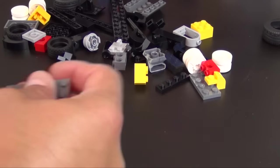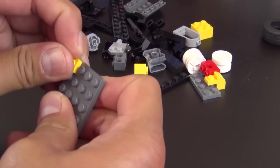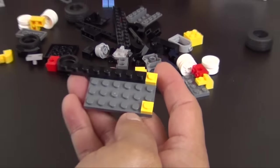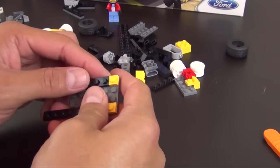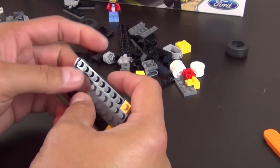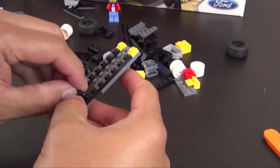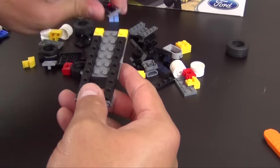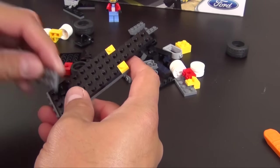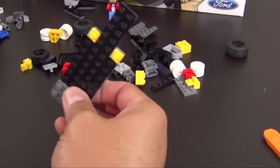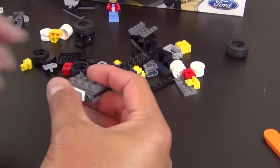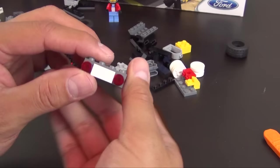Because now we are going to build our cool little Model A hot rod. Start with some plates. Zoom out just a bit so you can see the whole thing. Couple brackets with a one by two plate.